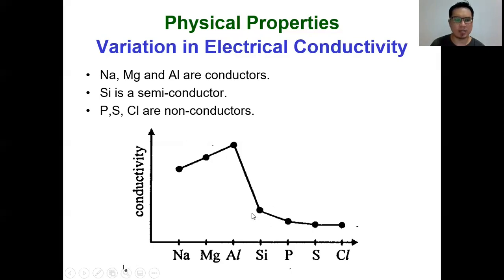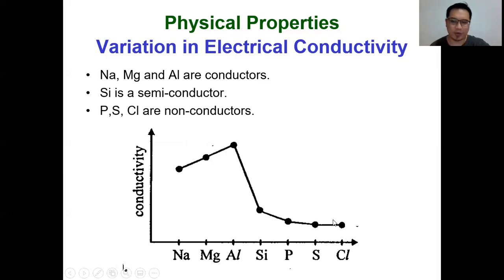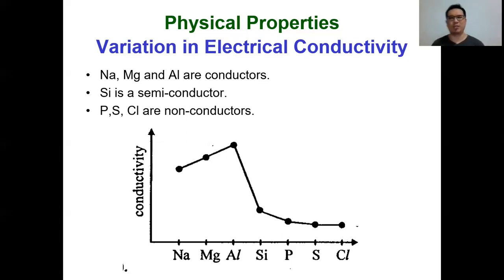Silicon is actually a semiconductor. In order for silicon to conduct electricity, most of the time you need to dope it with some other elements - it's used as a semiconductor in many electrical devices and circuits. Phosphorus, sulfur, and chlorine are, however, non-conductors of electricity because they don't have mobile electrons or mobile ions. In order to conduct electricity you must have either one of these. Phosphorus, sulfur, and chlorine, being non-metals with simple molecular structures, don't have any free mobile ions or free mobile electrons, so they are not conductors of electricity.